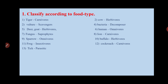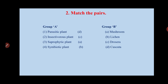Omnivorous means they depend on both animals and plants for food. Fungus is a saprophyte. Lion is also carnivorous. Sparrow is omnivorous because it eats both types of food — plants and animals. Frog is insectivorous. Cockroaches are carnivorous. Tick is a parasite — parasitic means they depend on other animals and suck their blood.